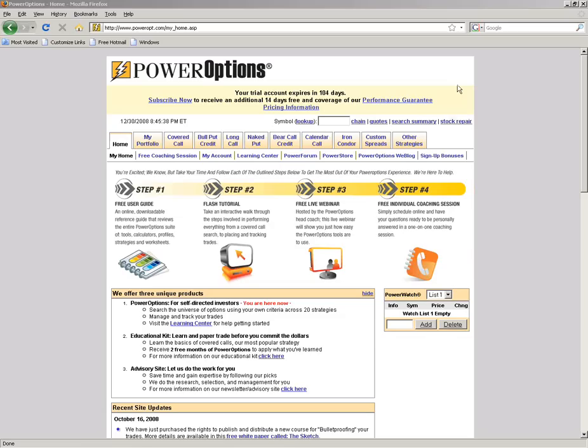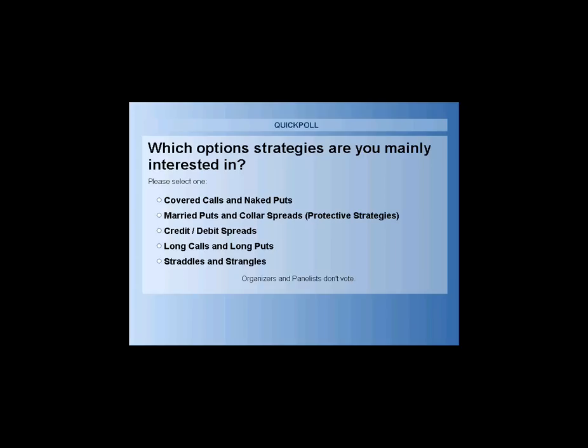Before I get started with the various tabs, I'd like to ask a quick poll question. What I want to know is: which option strategies are you mainly interested in right now? Are you interested in trading covered calls and naked puts? Are you doing married puts and collar spreads? Are you looking to do credit spreads or debit spreads? You might be interested in long calls and long puts, or perhaps straddles or strangles.